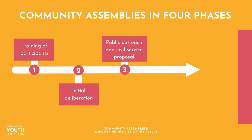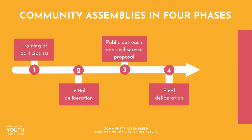In the next phase, the participants, with the support of the local authority and the media, reach out to the public about their proposals and gather signatures. Once a certain threshold is achieved, the proposal is taken up by civil servants, who will then scrutinise it, improve it and adapt it to actionable legislative language. Finally, there is another gathering where participants revise the changes made by the civil service and propose a final text to the local authority. Then, importantly, the local authority will have to hold a vote on this final proposal.